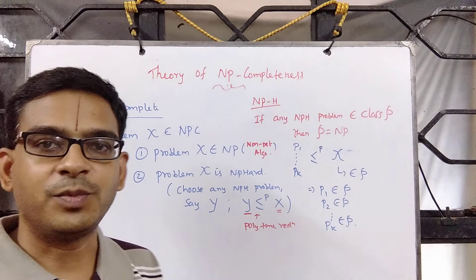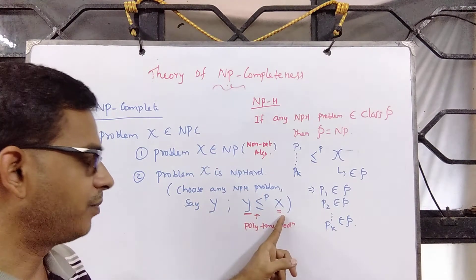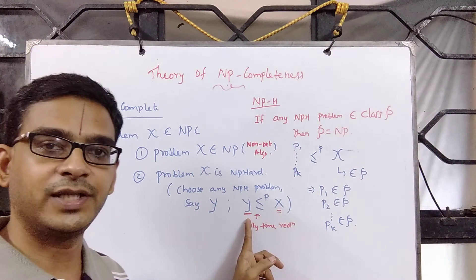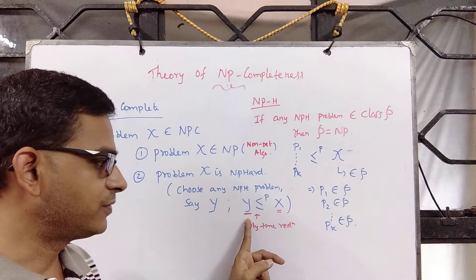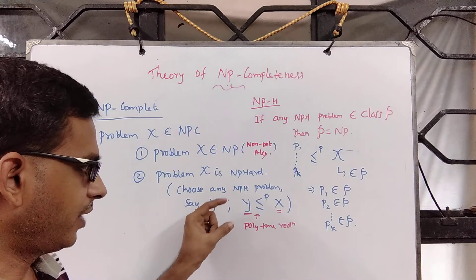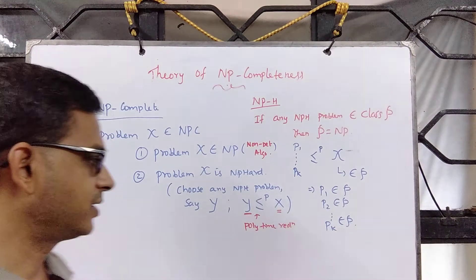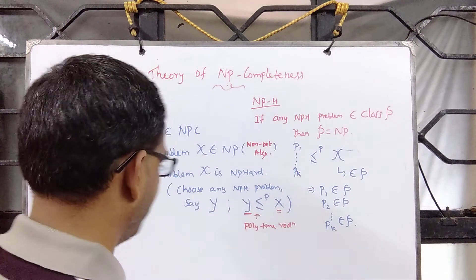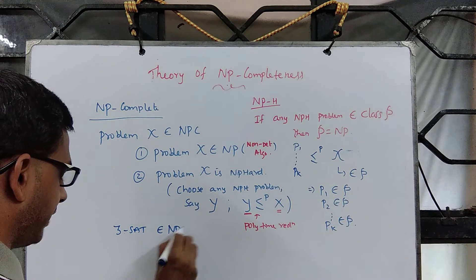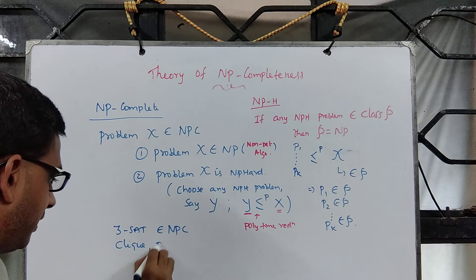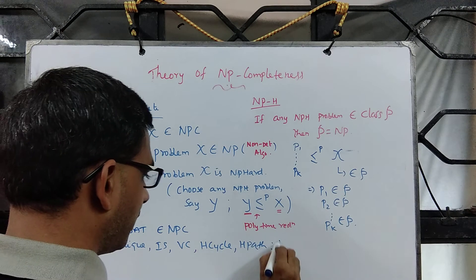To say a problem is NP-complete, you just have to do two things: show that it belongs to the set, and show that the problem is at least as difficult as every other problem in that set. To make the task easy, choose one NP-hard problem and give just one polytime reduction to problem X — then our problem becomes NP-complete. We know that 3SAT is in NP and NP-hard, so 3SAT belongs to NPC. The same is the case with Clique, Independent Set, Vertex Cover, Hamiltonian Cycle, and Hamiltonian Path — they are all NP-complete problems.